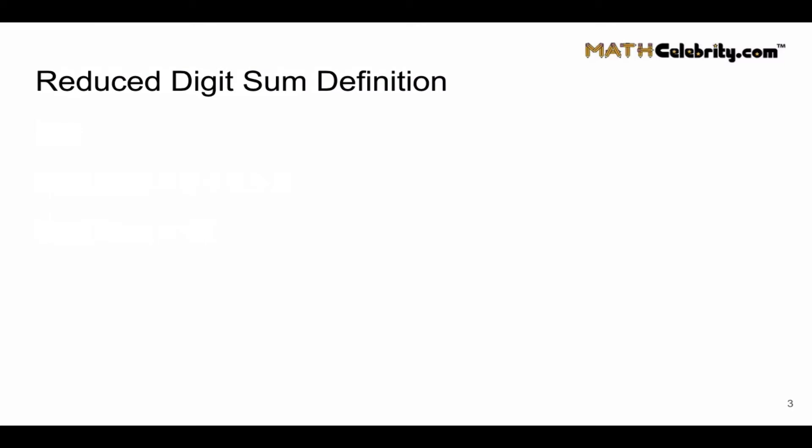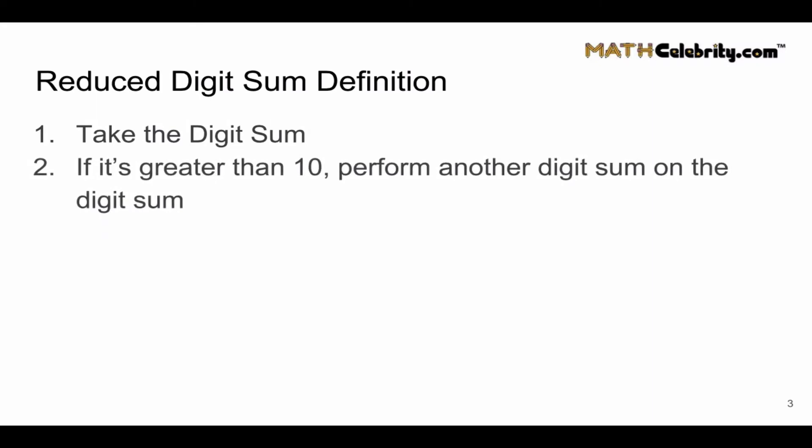So what is the difference between a digit sum and a reduced digit sum? The reduced digit sum takes the digit sum, figures out if it's greater than 10. If it is, perform another digit sum on the digit sum. We're going to continue step 2 until the digit sum is less than 10, and this is our reduced digit sum.